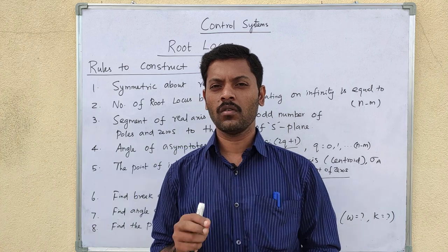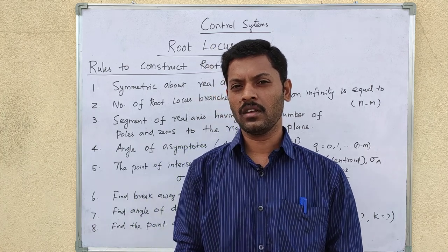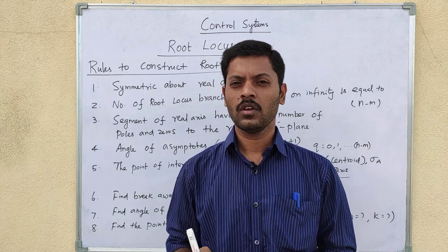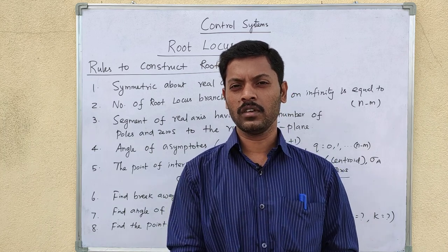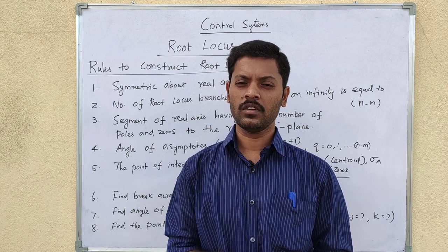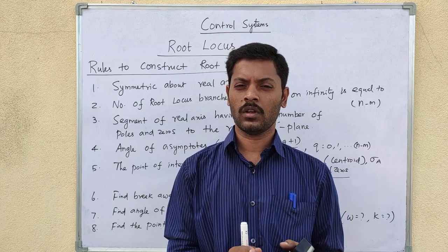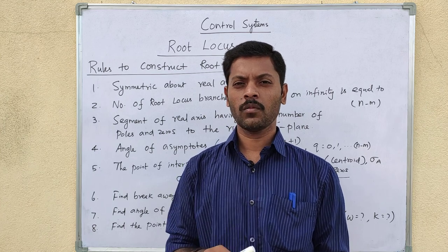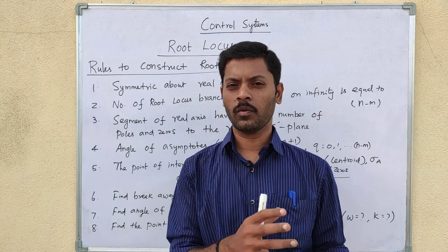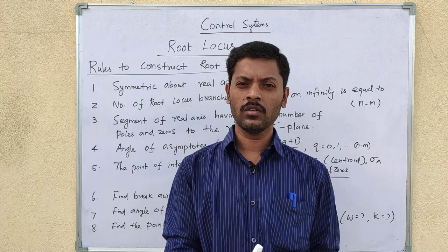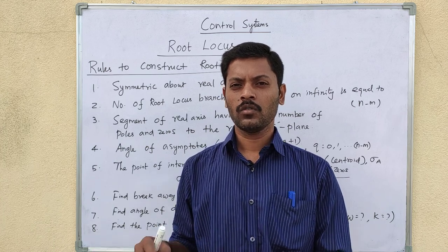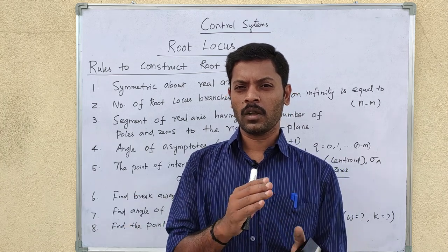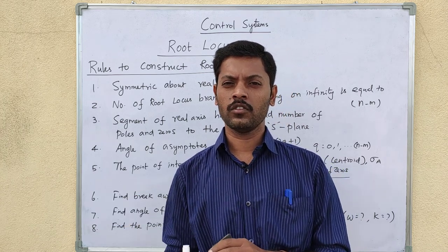Next is to find the number of branches in the root locus. We will see how many open loop poles and how many zeros there are. One root locus branch starts at each open loop pole and terminates at an open loop zero. We will see how many branches go to infinity — that is the number of poles minus the number of zeros.